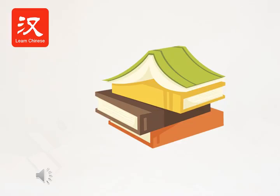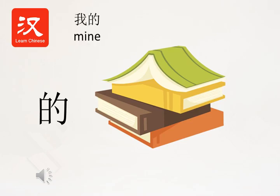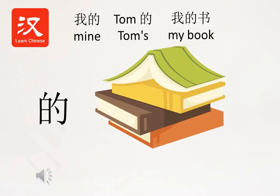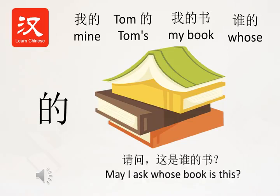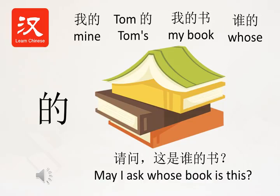Key words of the day. Today we'll focus on the usages of the Chinese character 的: 我的 (my), Tom 的 (Tom's), 我的书 (my book), 谁的 (whose), 请问这是谁的书? (May I ask whose book is this?) All in today's Chinese Studio.